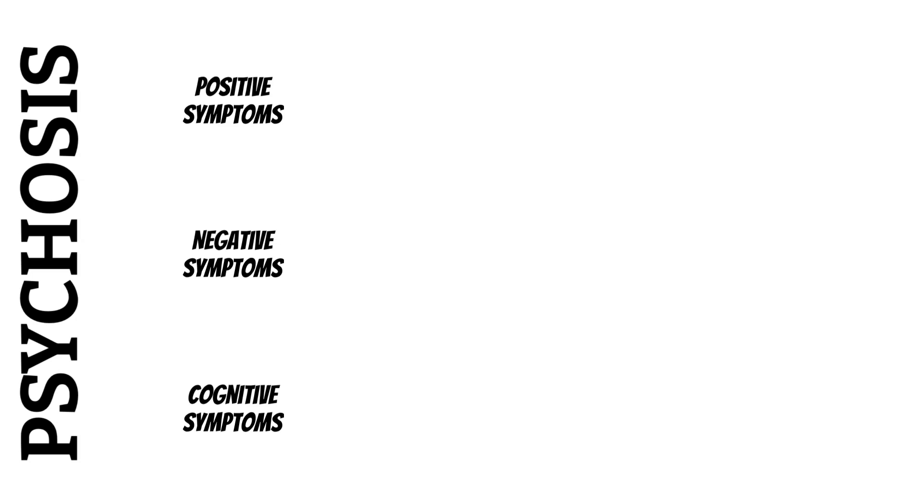Psychosis is a condition that affects the brain, causing a person to lose touch with reality and have abnormal perceptions and thinking. The signs and symptoms these patients present with can be placed into three categories: positive symptoms, negative symptoms, and cognitive symptoms. The term positive refers to the presence of symptoms rather than their absence — it's positive as in a plus sign, excess. It doesn't mean the symptoms are good or bad; instead, these symptoms add on to what would be considered normal experiences.